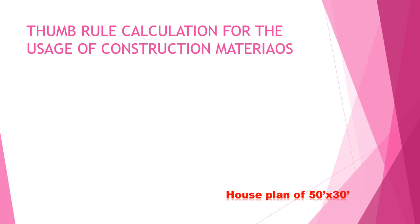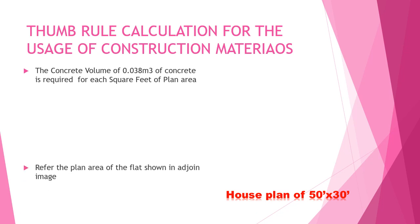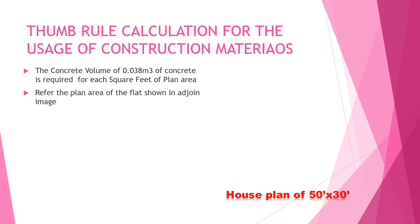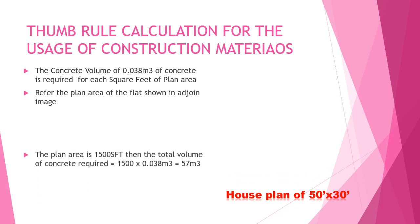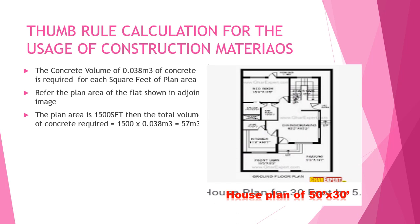Thumb rule calculations for using construction materials: the concreting volume of 0.038 m³ of concrete is required for each square foot of the plan area. Refer to the plan area of the slab shown in the adjoining image. If the plan area is 1500 square feet, then the total volume of concreting required is 1500 × 0.038 m³ = 57 cubic meters.